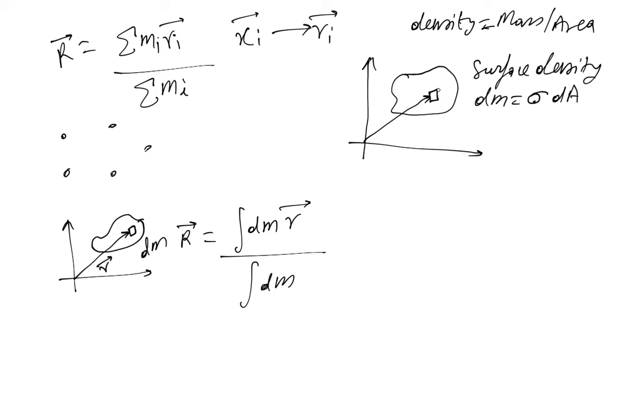So this is given then you can say dm equals sigma times dA. What is dA? Well, dA is the area of this small square and suddenly you will have a way to find dA in terms of dx and dy. We will talk about that more.